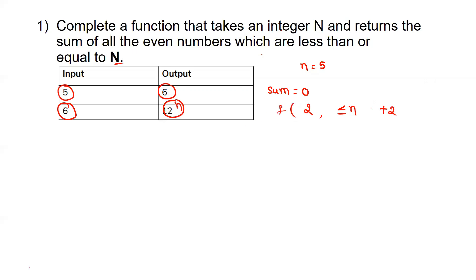So this is your for loop: i starts at 2, i increments by 2, condition is i less than or equal to n. The sum variable is updated by adding the current iteration variable i at each step. You are adding all even numbers less than or equal to the given n, and finally you return that sum.